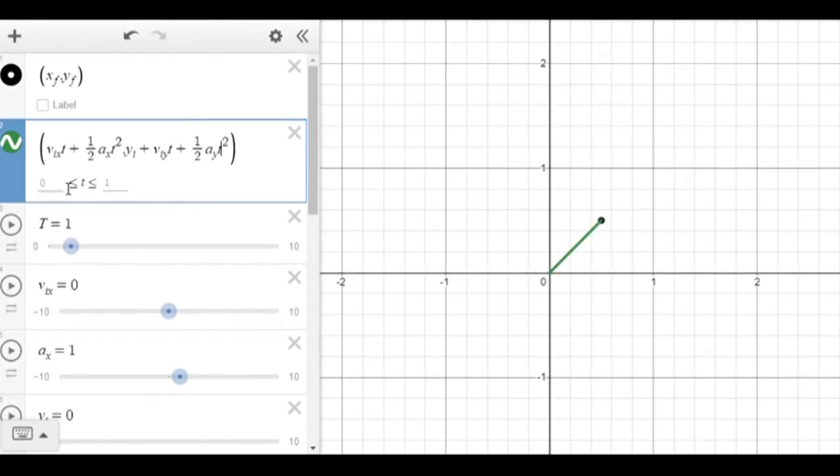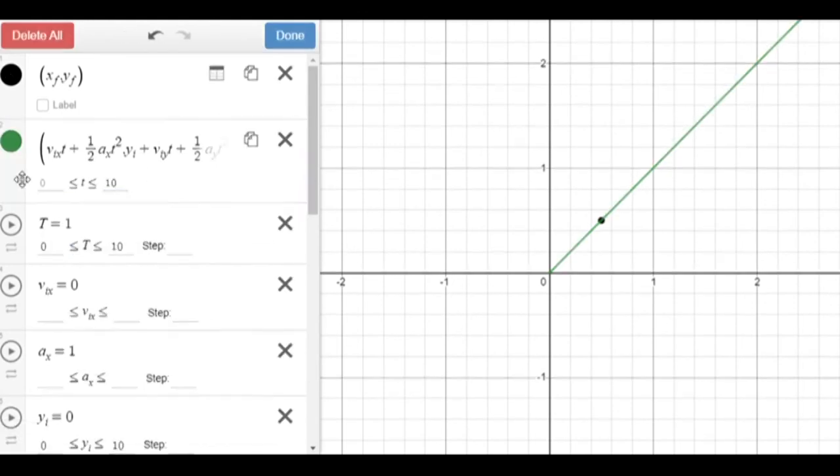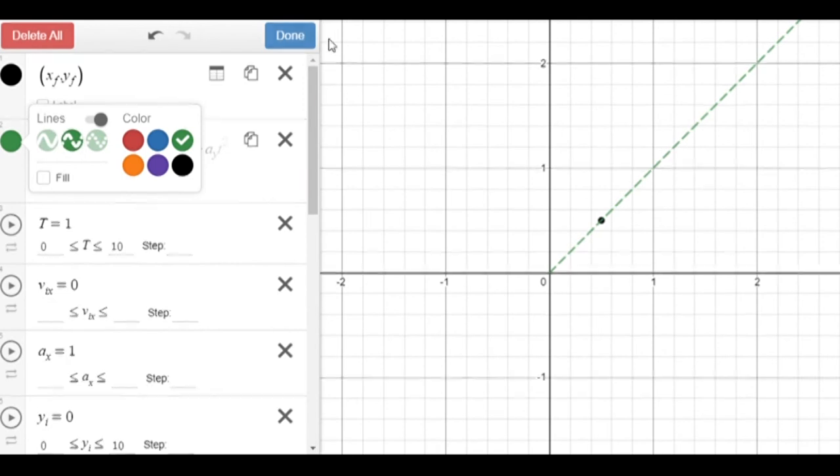And I want to make sure the bounds for the servers for the time is zero and ten, and now I'm going to change this to a dashed line so it's easier to look at.